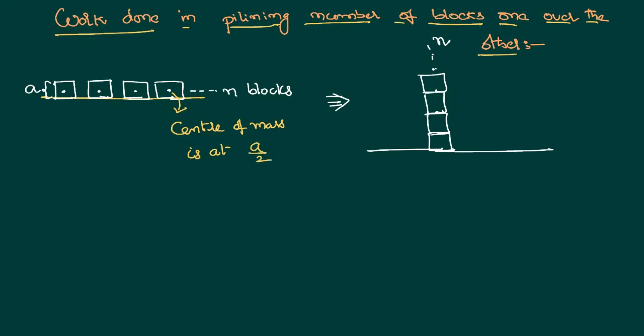So it is at the middle of this side, that is nothing but equal to A by 2. Therefore each block has a potential energy. What is the potential energy?